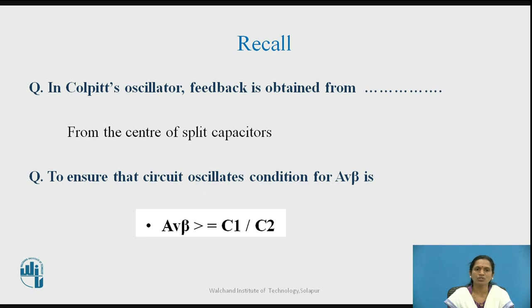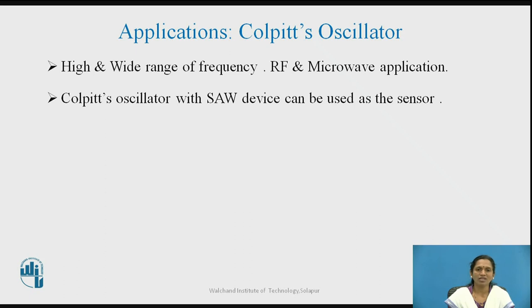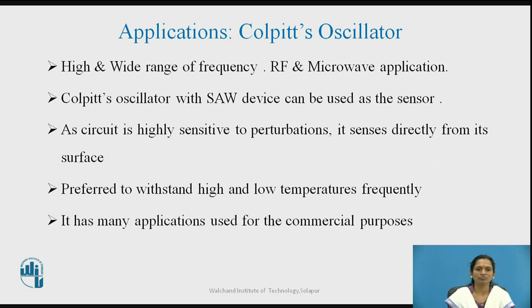And that comes to applications of Colpitz oscillators are like this as you know that it is used for the high frequency of oscillations up to megahertz frequency. So, it is mostly used for high and wide range of frequency applications like RF and microwave. It is also used with the SAW device nothing but acoustic waves, sawtooth acoustic waves can be used and that can be utilized as a sensor. Surface acoustic waves. As circuit is highly sensitive, it senses directly from its surface and so it is widely used for this kind of sensitive applications. It is preferred to withstand high and low temperature frequently and it is mainly having applications for the commercial purpose.